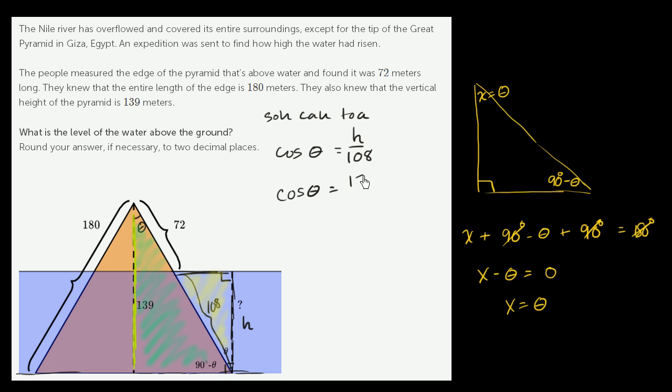So it's going to be equal to 139 meters. And what's the length of the hypotenuse? The hypotenuse is this length right over here, it's 72 plus 108. We already have it labeled here, it's 180. We can assume that this pyramid is an isosceles triangle. So the cosine is adjacent, 139, over the hypotenuse, which is 180.